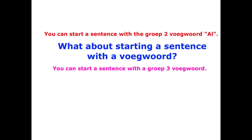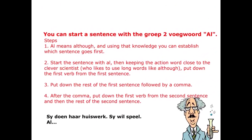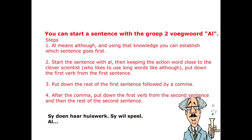The second thing that applies to more than one group: can you start a sentence with the foefword? Yes. For Groep 2 you can only use the foefword al. And you can use any Groep 3 foefword. Let's look at starting with a Groep 2 foefword first. So we've said that you can start with al. The example is: Sy doen nie altyd haar huiswerk nie. Sy wil speel. Begin met al. Al means 'although', and that's going to affect some kind of causality and order.